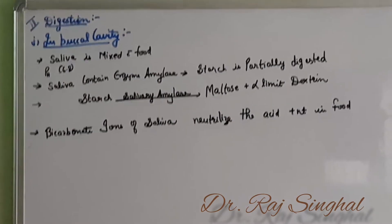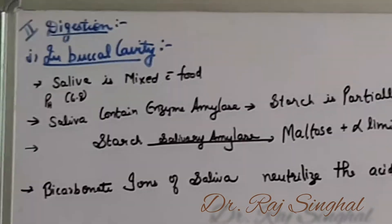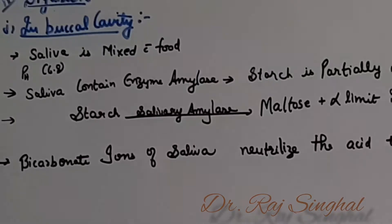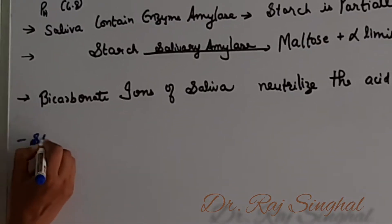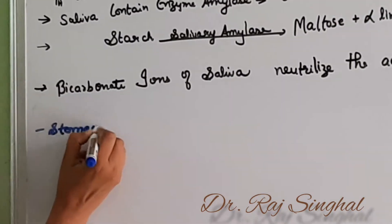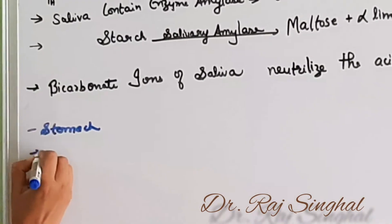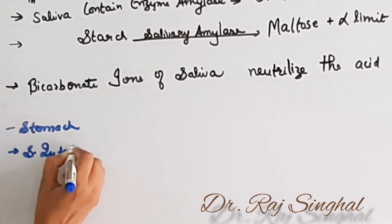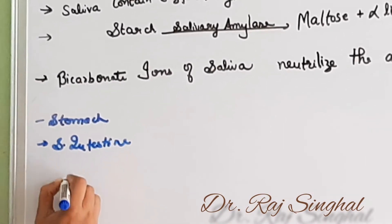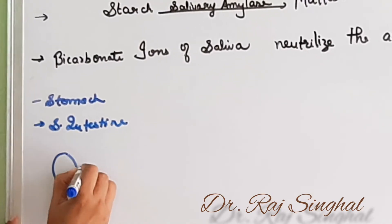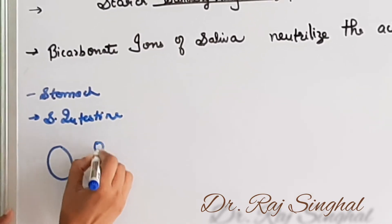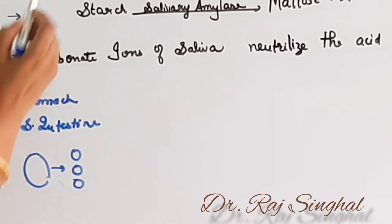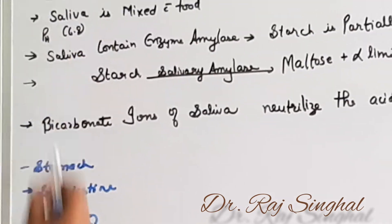Digestion occurs in different parts of the alimentary canal — that is, in the buccal cavity, in the stomach, and in the small intestine. In digestion, bigger food molecules are broken down into smaller molecules. Digestion begins in the buccal cavity.